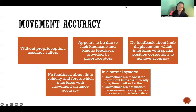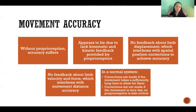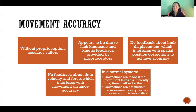Movement accuracy is especially affected if proprioception is missing. If we don't have accurate proprioceptive data coming in, our movement accuracy is going to suffer. This appears to be due to lack of kinematic and kinetic feedback — kinematic feedback like velocity and acceleration, and kinetic feedback about forces being applied by muscles, gravity, or other sources.